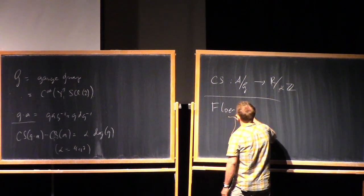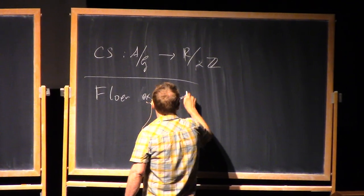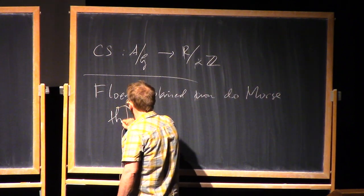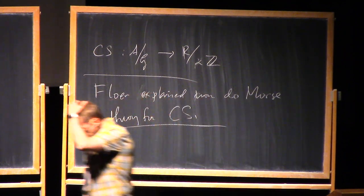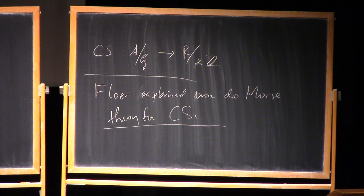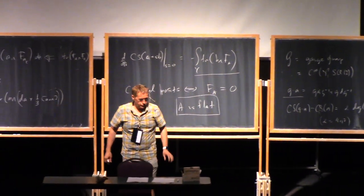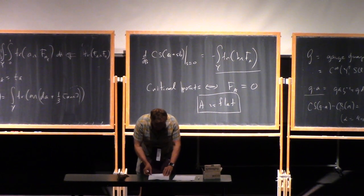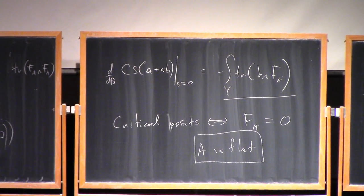This is what we would like to do Morse theory for. Floer's amazing contribution was explaining how to do Morse theory for Chern-Simons. For this lecture, we're not going to do too much with that, except I just want to explore this a little bit and get some feeling for what this is supposed to tell us about three-manifolds.